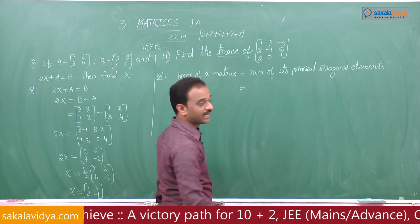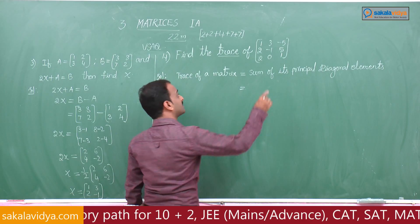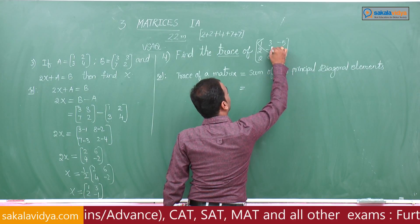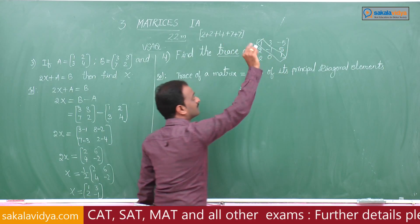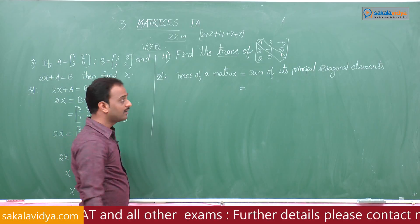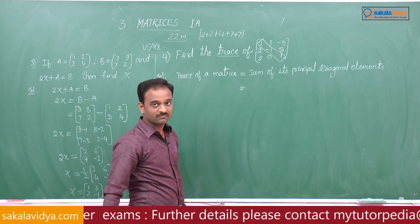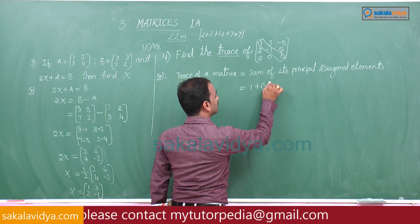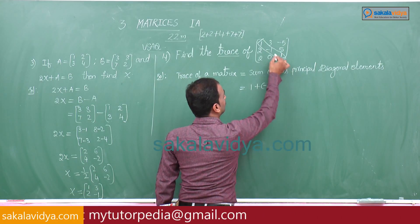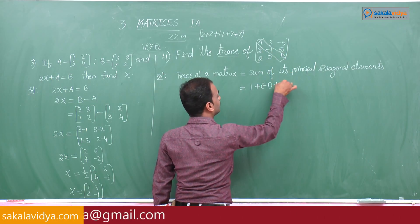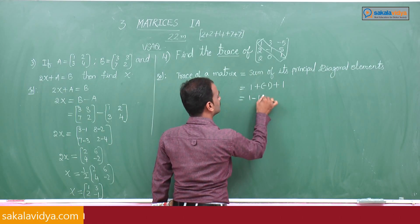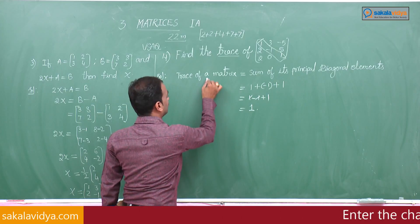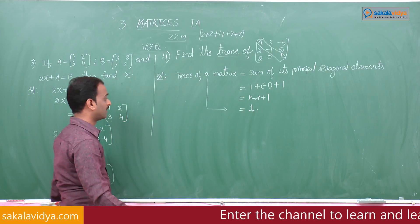The principal diagonal elements are 1, -1, and 1. Their sum is 1 plus (-1) plus 1, so the trace of the matrix equals 1.